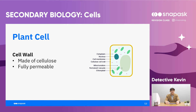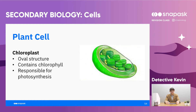The cell wall is made of cellulose and is fully permeable. It can protect the plant cell from injury as well as provide the plant cell a fixed shape. The chloroplast is an oval structure which contains a green pigment called chlorophyll, and this is responsible for photosynthesis.